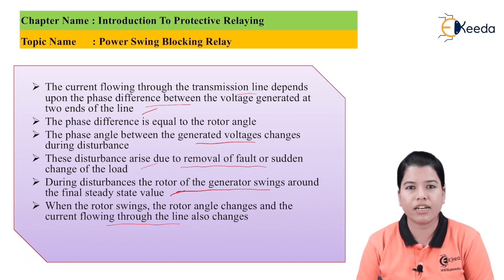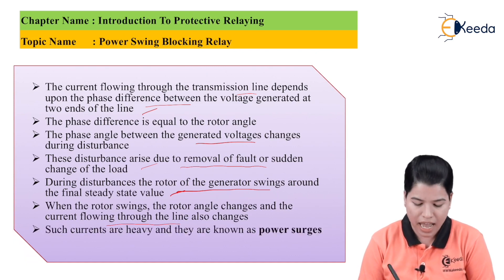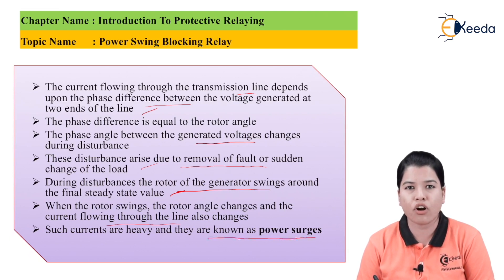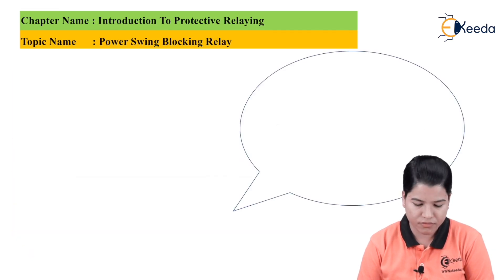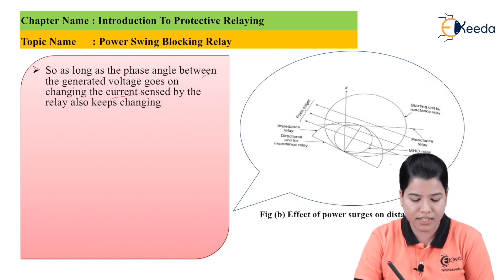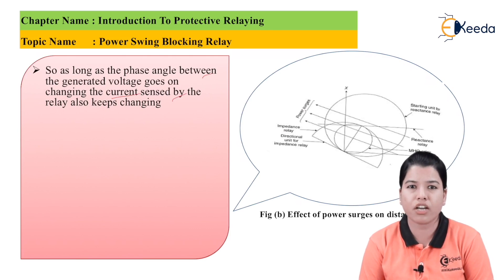As the rotor angle changes, the current in the transmission line will also change. Such heavy currents are known as power surges — when the rotor angle changes and there is a change in transmission line current, the value of this current is very heavy. As long as the phase angle between the generated voltages keeps changing, the current sensed by the relay also keeps changing, and the relay might interpret this as a fault condition.